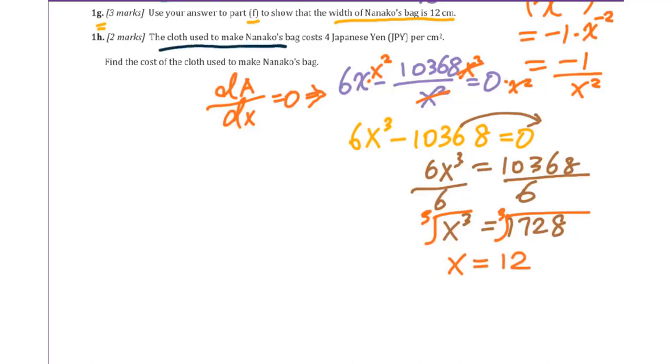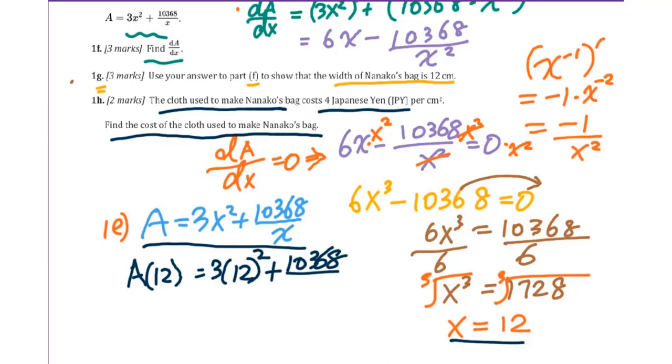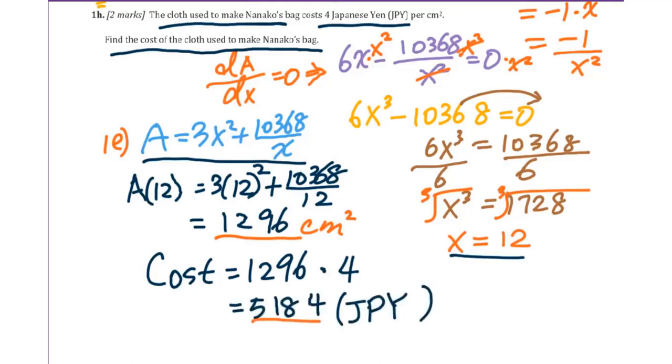The cloth used to make the bag costs 4 Japanese yuan per centimeter squared. Find the cost of cloth used to make the bag. From 1e, we know this is the area of the cloth. When x equals 12, we plug in. So we get the area equals 3 times 12 squared plus 10368 over 12 equals 1296 centimeters squared. Then the cost equals this area of 1296 times 4 equals 5184 Japanese yuan.